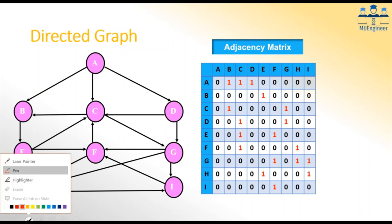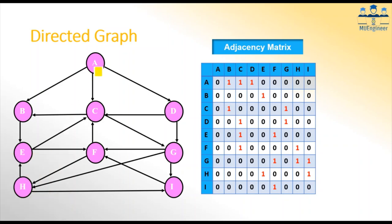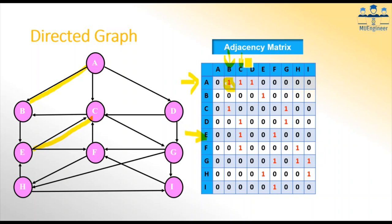Wherever there is an edge between any two nodes — say, for example, there is an edge from node A to B — then from row A to column B there will be value one. Similarly, if there is an edge from E to C, from row E and column C there will be a value one. In all other cases where there is no edge, we write zero. So we are done with the adjacency matrix.